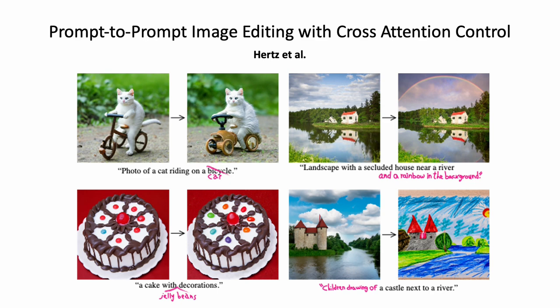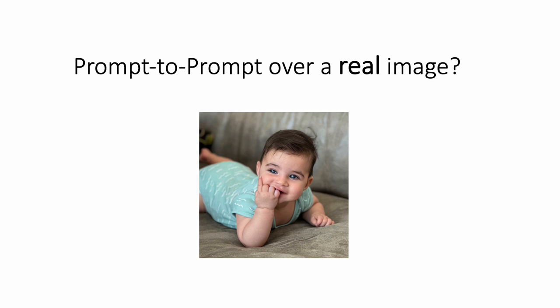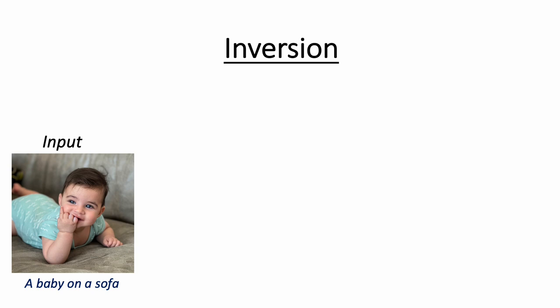The great work of prompt-to-prompt shows how to edit generated images by injecting the attention maps obtained when producing the source image. However, real images do not just show up with attention, so editing a real image with such tools requires a process called inversion.